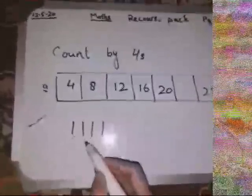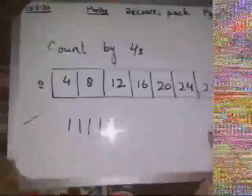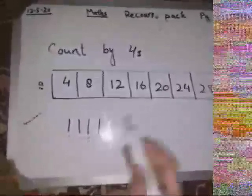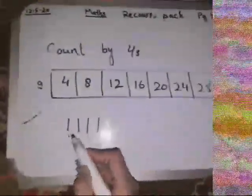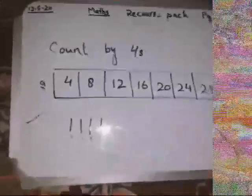Then thirteen, fourteen, fifteen, sixteen. Sixteen. Then seventeen, eighteen, nineteen, twenty. Then again count four - twenty-one, twenty-two, twenty-three, twenty-four. Then twenty-five, twenty-six, twenty-seven, twenty-eight. Twenty-eight has already been written, so next twenty-nine, thirty, thirty-one, thirty-two.